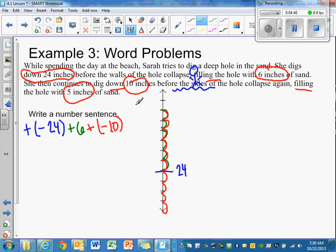Before the sides collapse again filling the hole with 5 inches. So it goes back up 5 inches. So we're all the way down here and then it fills up with 1, 2, 3, 4, 5. So it goes up 5.